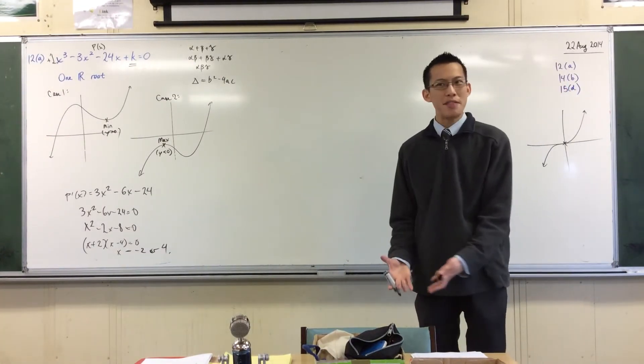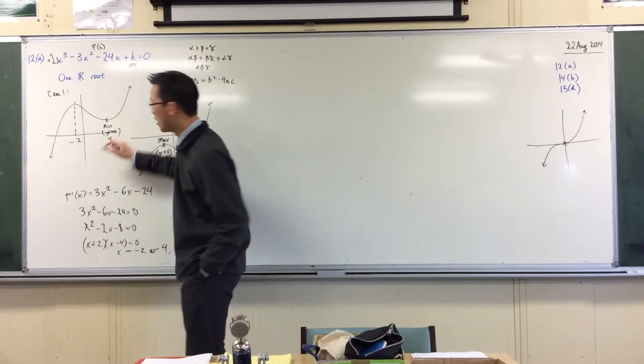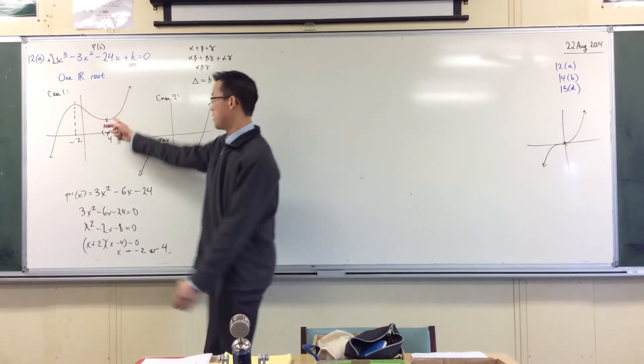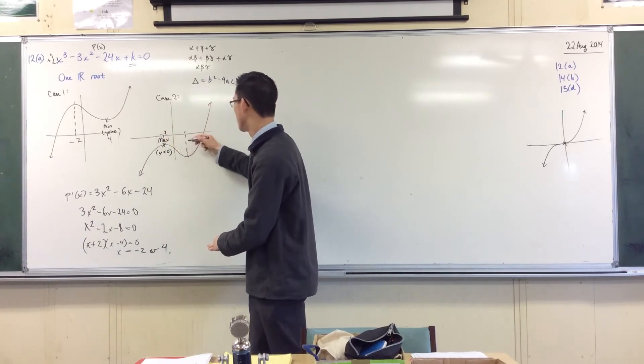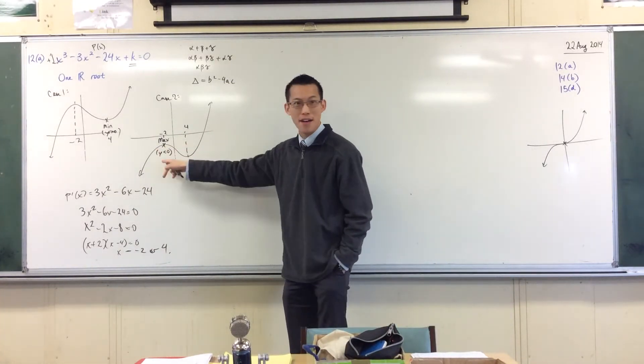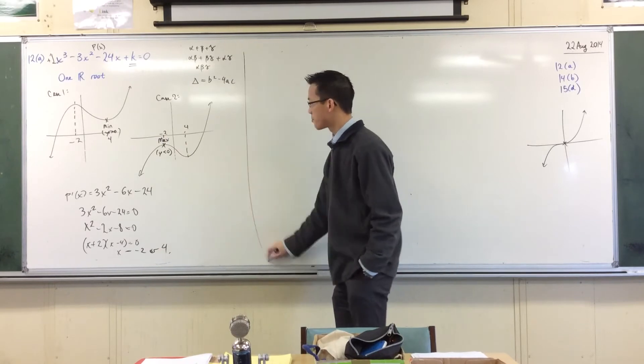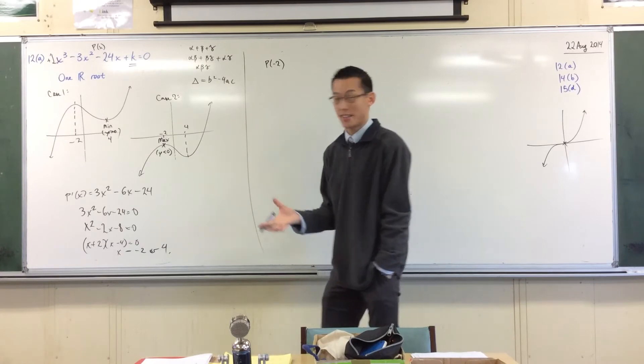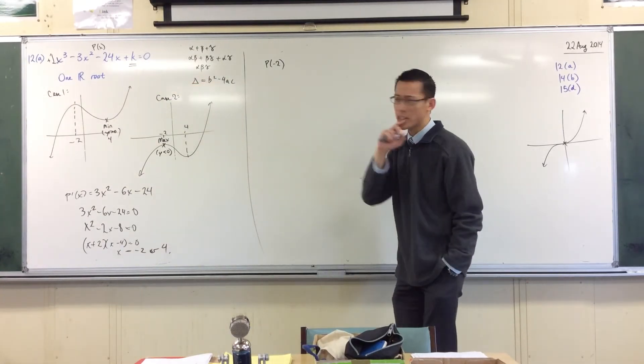But of course those values themselves, the x values, they're not of that much use to me. Because they tell me, negative 2 and 4, they tell me horizontally where I'm situated. But I'm not interested in horizontal. I'm interested in up-down. I want to get this minimum high enough or this maximum low enough. That's negative 2. Oh, my scale died. You get the idea. So if what I want is actually the y value, I'm going to need to take these and pop them back into my original equation. Well, I named it p. So I'm going to say, well, what's p of negative 2?